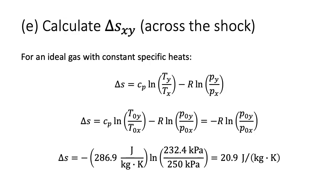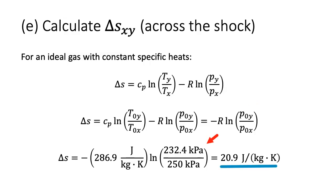For Part E, we calculate the change in entropy across the shock. We begin by writing the relationship for the change in entropy for an ideal gas with constant specific heats. From the temperature-entropy diagram, the change in entropy is the same for the static conditions from state X to state Y as for the stagnation conditions from state 0X to 0Y. Since the stagnation temperature is constant, the equation reduces to only being a function of the stagnation pressure ratio. Plugging in values, we get a change in entropy of 20.9 joules per kilogram Kelvin, which is positive as expected.